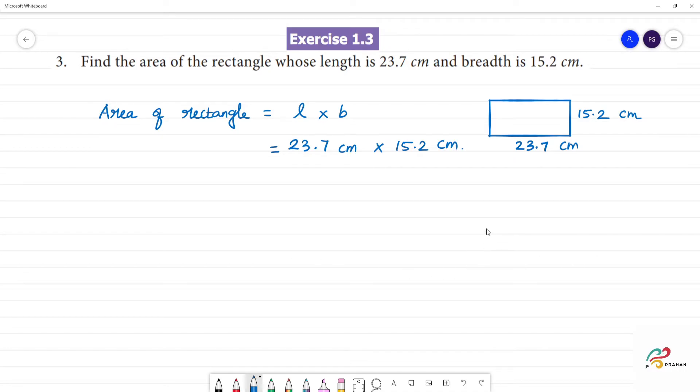23.7 multiplied by 15.2. First, 7 times 2 is 14, remainder 1. 3 times 2 is 6 plus 1 is 7. 2 times 2 is 4.